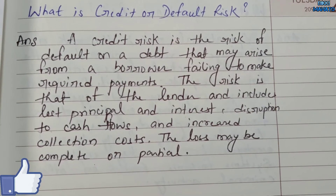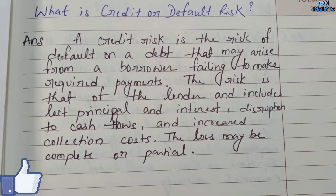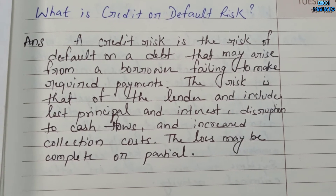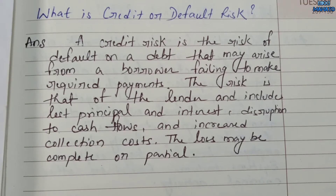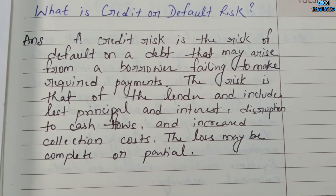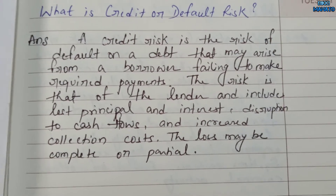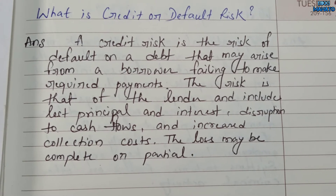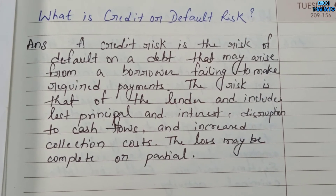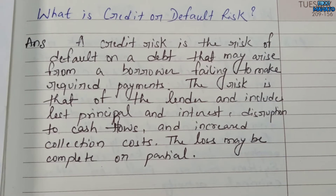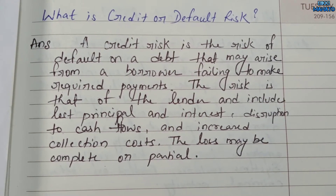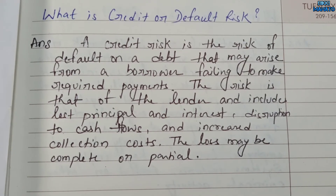Today's topic is credit or default risk. A credit risk is the risk of default on a debt that may arise from a borrower failing to make required payments. The risk is that of the lender and includes loss of principal and interest, disruption to cash flows, and increased collection costs. The loss may be complete or partial.